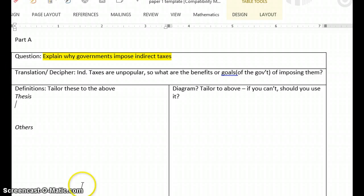So indirect taxes are unpopular, so what are the benefits or goals of the government when they impose them? So that's all I mean by that second box. And I think that's an important little job to go through in your mind to think about, what is the question really looking for? So now when we look at the four big squares, the first square is about definitions. I think you guys know that since indirect taxes is in the question itself, you need to define that.